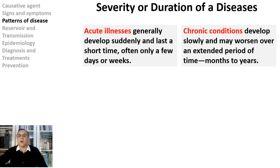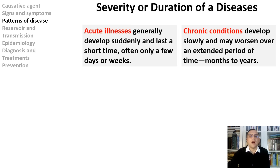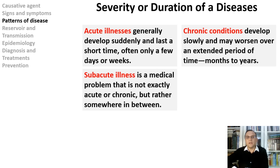Rabies, Ebola, anthrax, and smallpox are fatal acute diseases, also known as high-consequence pathogens. Unlike acute illnesses, chronic conditions develop slowly and may worsen over an extended period of time — months to years. Subacute illness is a medical problem that is not exactly acute or chronic, but rather somewhere in between. Subacute infections fall between acute and chronic in character, especially when closer to acute. For example, subacute bacterial endocarditis is often caused by a particular group of streptococcal bacteria that usually live in the mouth and throat. Subacute conditions can be improved if treated appropriately, but they might be difficult to diagnose.